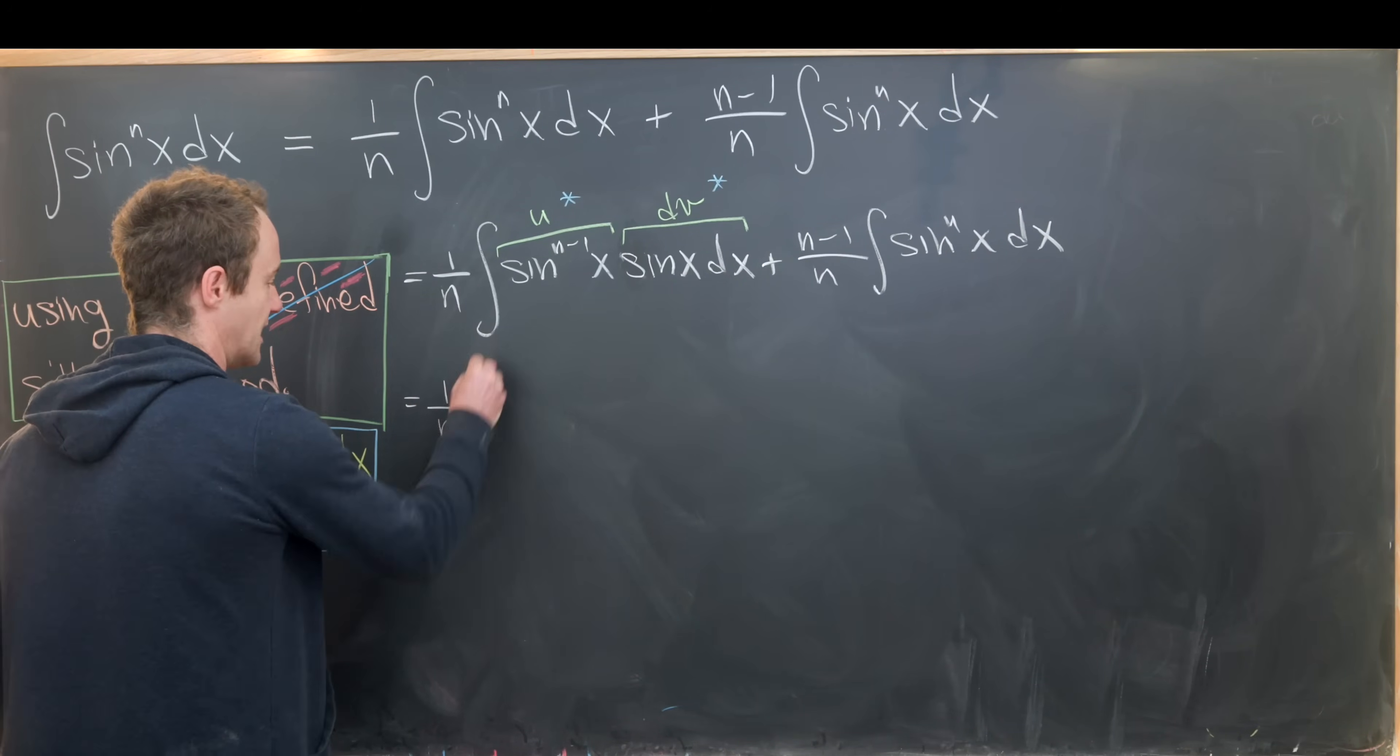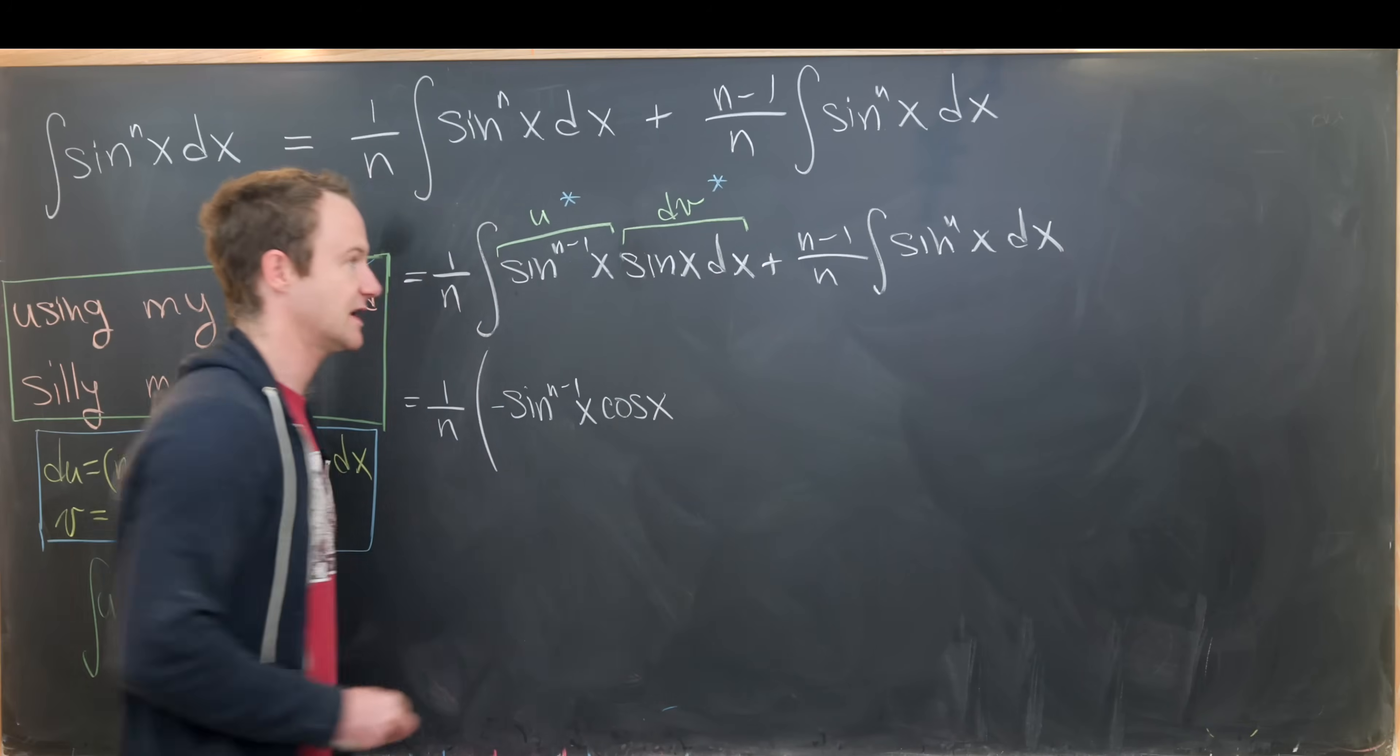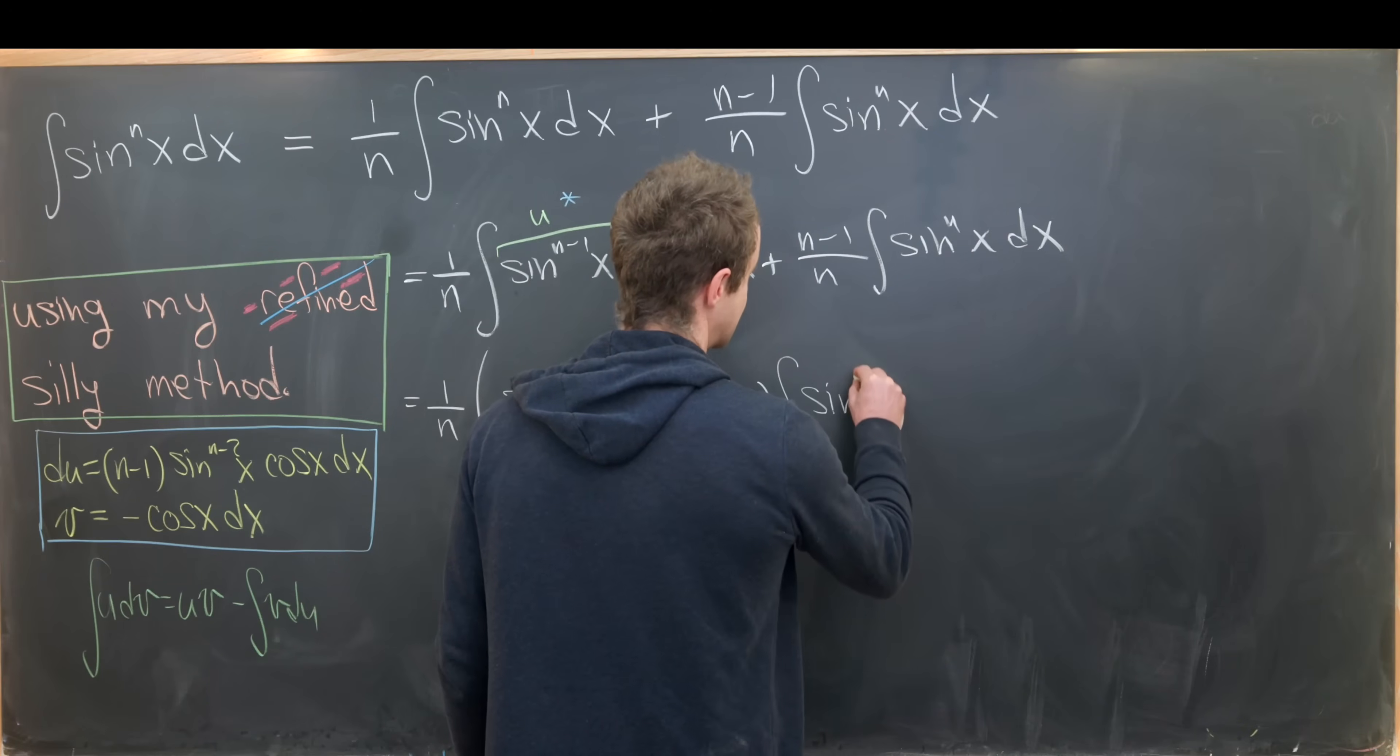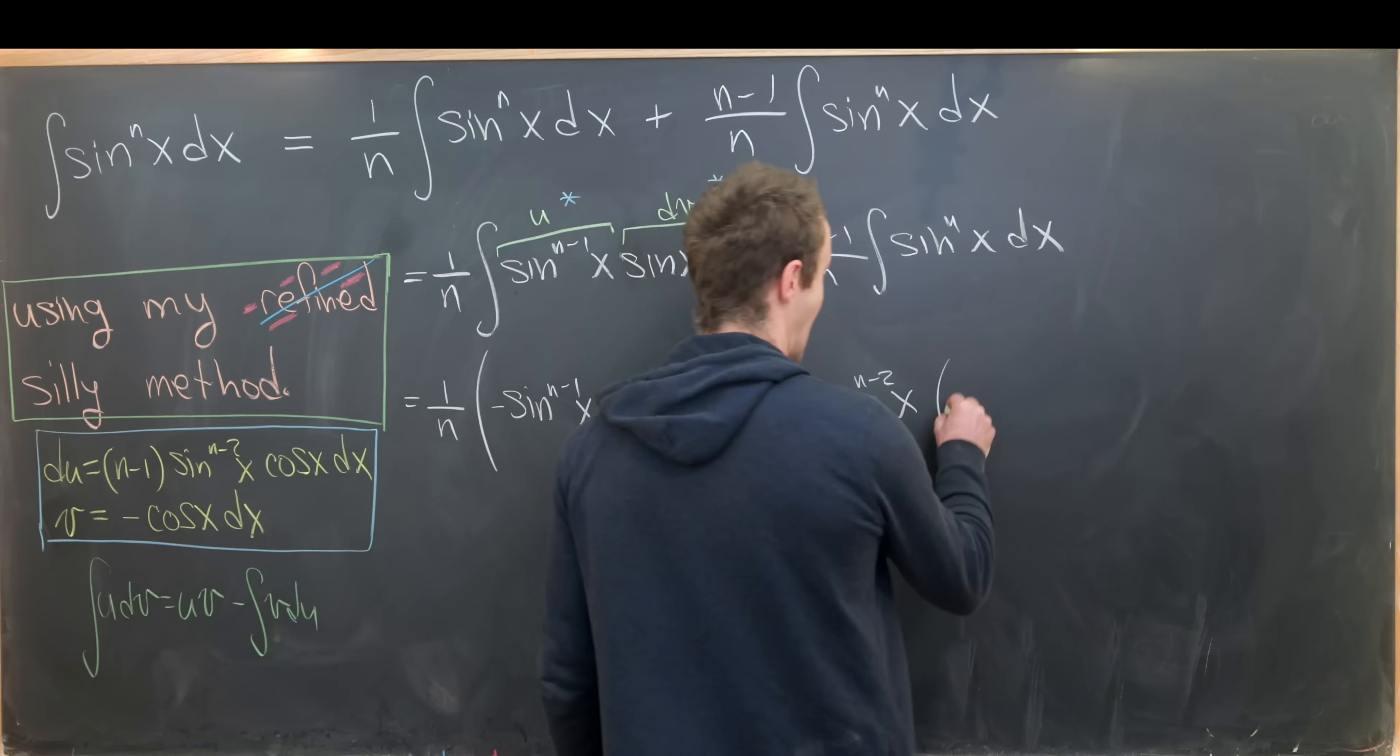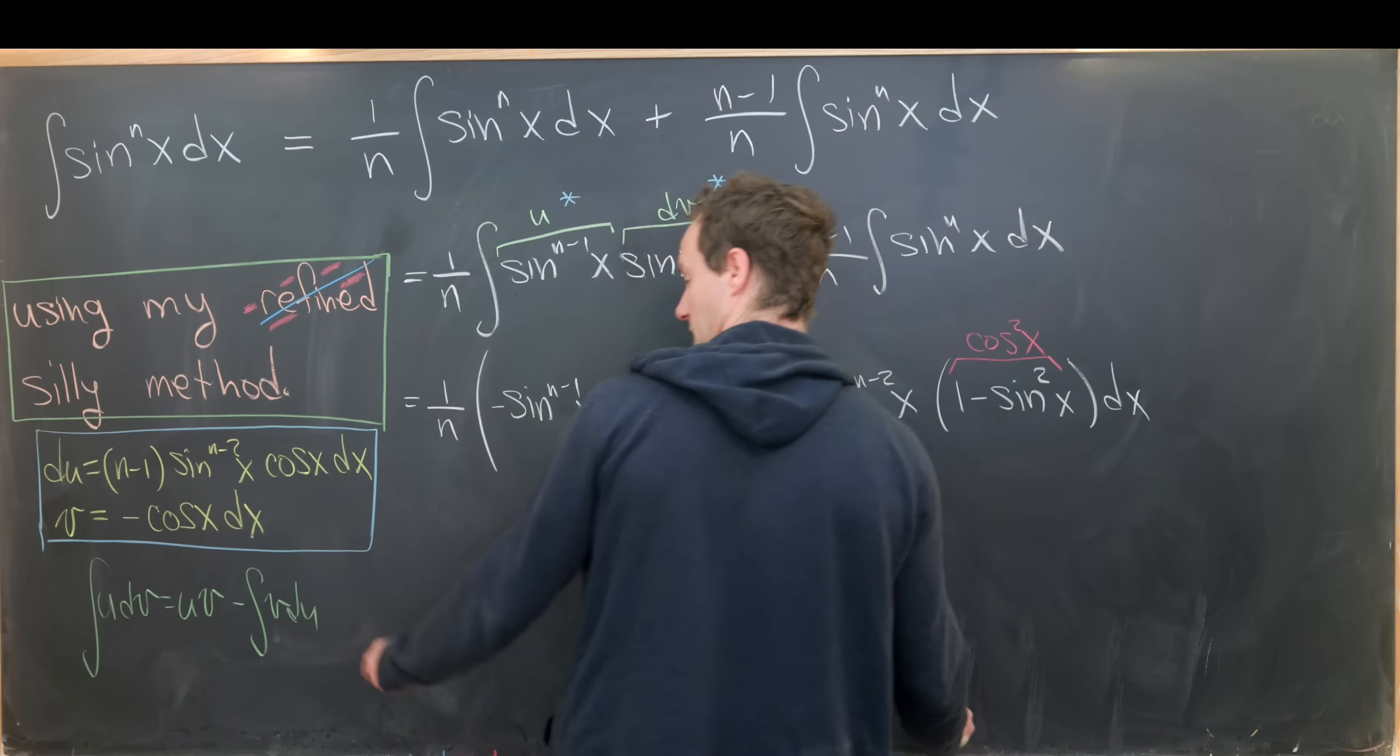So we'll have one over n, that'll be out in front of everything. And then u times v, let's notice that that is sine n minus one x times negative cosine x. So I'll write this as negative sine n minus one of x times cosine of x. And then we have minus the integral of v du, notice the minus sign will cancel with this right here, and that's going to leave us with something like this. We'll have plus n minus one times the integral of sine to the n minus two x times cosine squared x. But now I'm going to take the opportunity to write that cosine squared as one minus sine squared x dx. And let's just reiterate that this one minus sine x came from cosine squared in this v du.